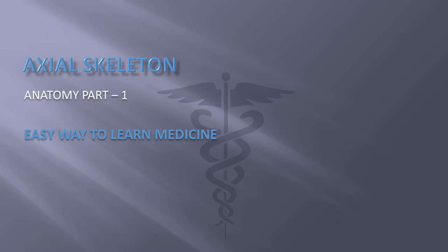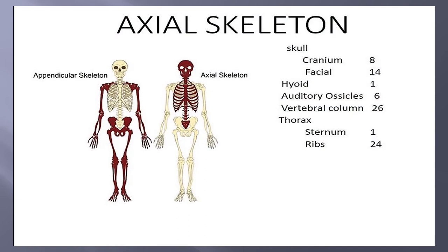Hi everyone, today we are going to see about axial skeleton anatomy. We are going to see three parts. In the first part we are going to see about axial skeleton. I gave you two pictures — one is appendicular skeleton and one is axial skeleton.